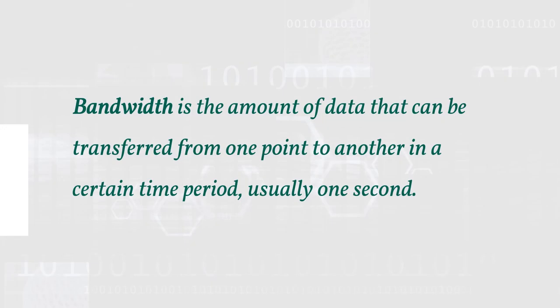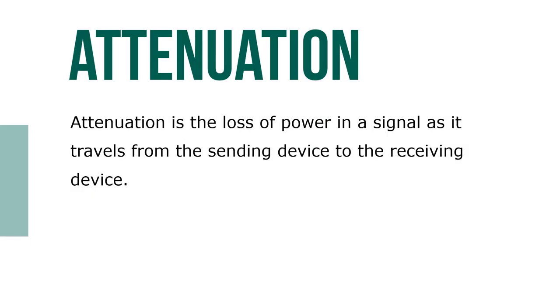Bandwidth is the amount of data that can be transferred from one point to another in a certain time period, usually one second. Attenuation is the loss of power in a signal as it travels from the sending device to a receiving device.